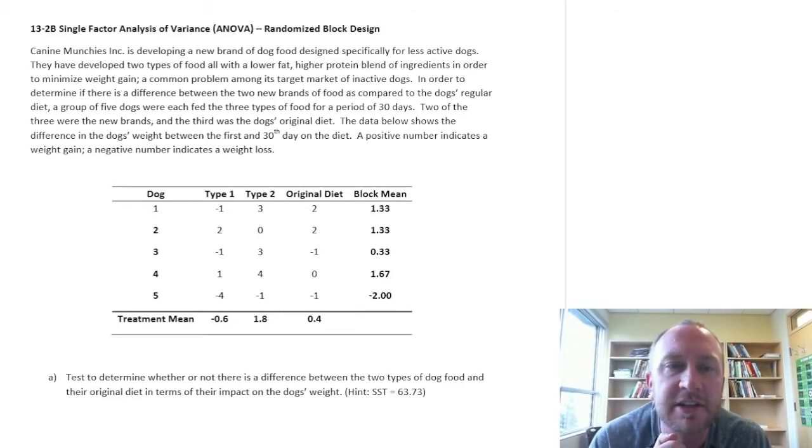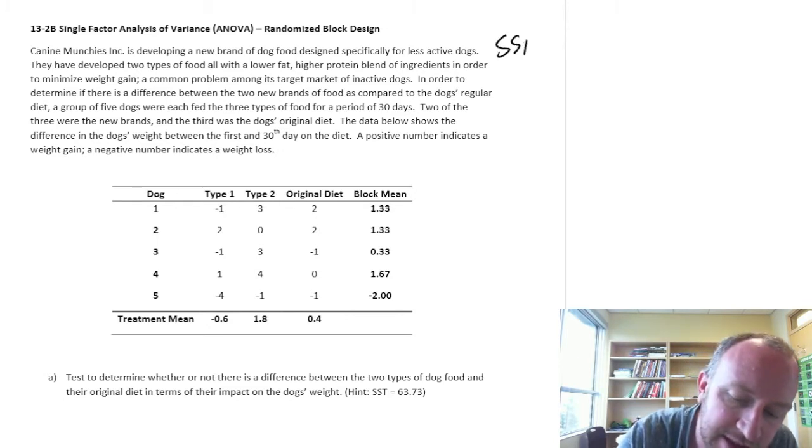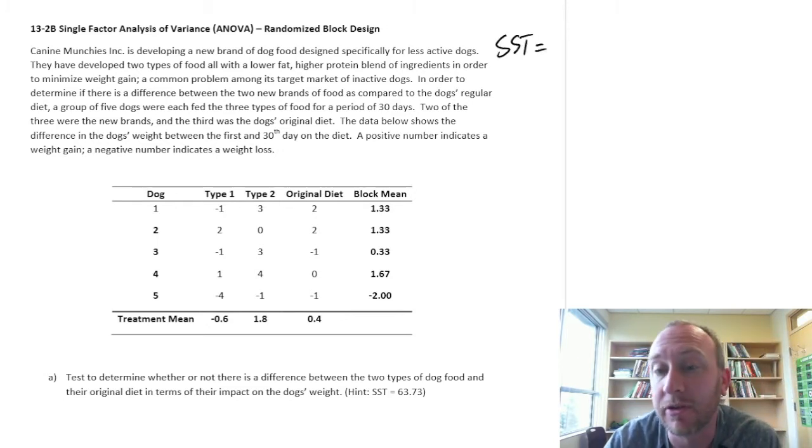Okay, here's another exercise now, a single-factor ANOVA, another randomized block design. So again, just a little recap. What we're doing here is basically accounting for the different sources of variation that exist within the data set.